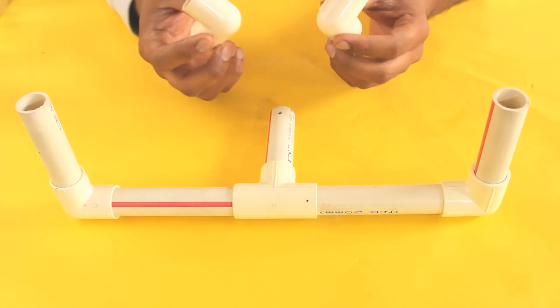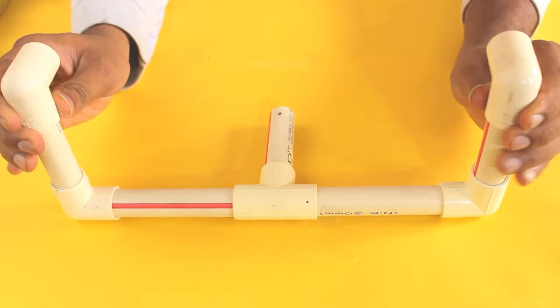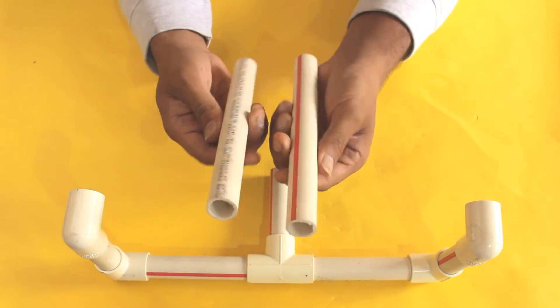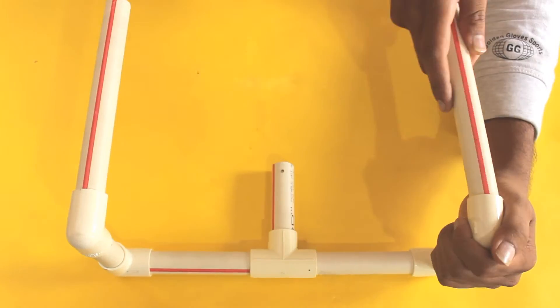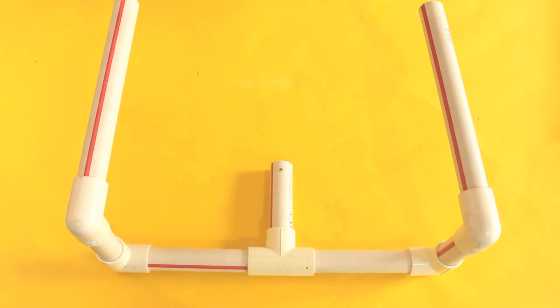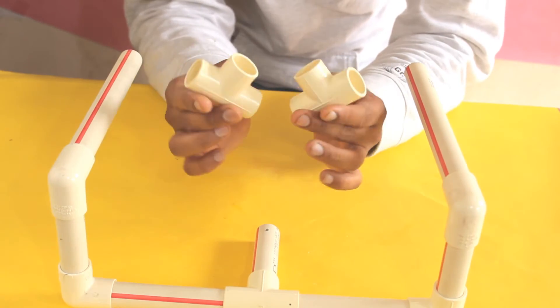Add two elbows to the bottom part. To these elbows, connect eight inch portions. To this, add three-way connectors.